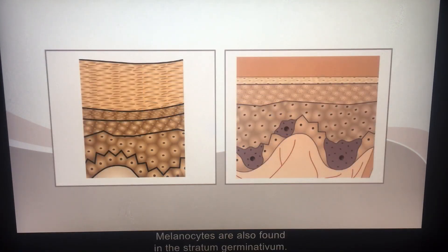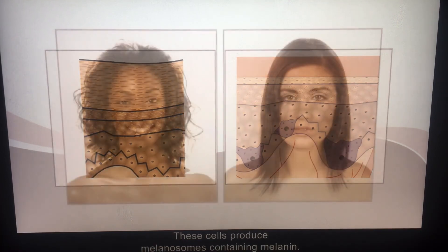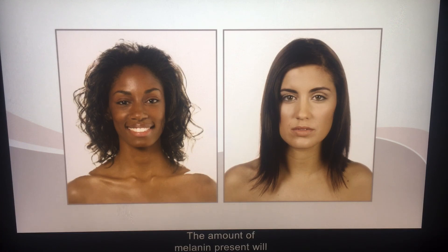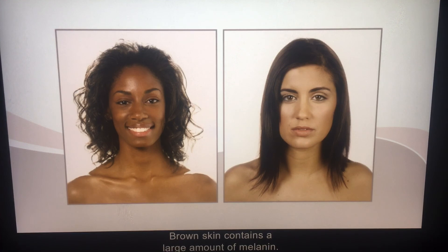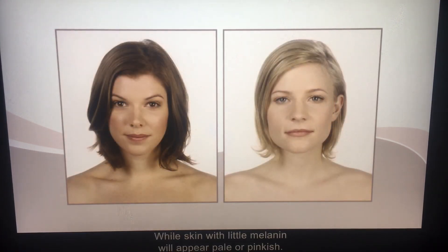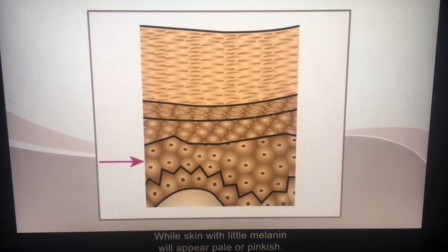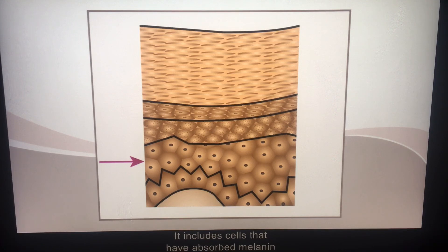Melanocytes are also found in the stratum germinativum. These cells produce melanosomes containing melanin. The amount of melanin present will determine the skin's color. Brown skin contains a large amount of melanin, while skin with little melanin will appear pale or pinkish. The next layer up is the stratum spinosum, which includes cells that have absorbed melanin to distribute pigmentation to other cells.